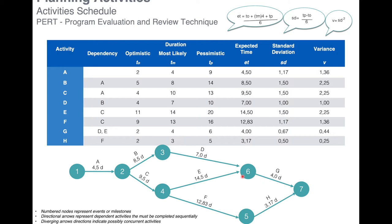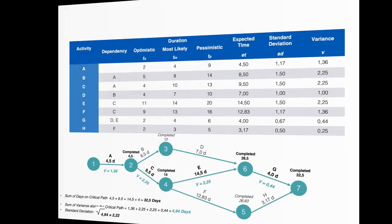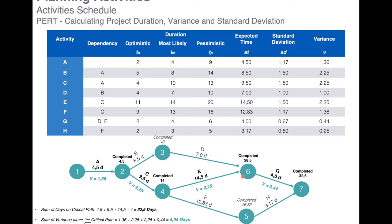Once we've calculated all values, we find the duration along the critical path — the longest sequence of activities to deliver the project. The critical path runs through A (4.5 days), C (9.5 days), E (14.5 days), and G (4 days). Summing these gives a total duration of 32.5 days along the critical path.